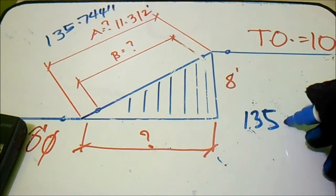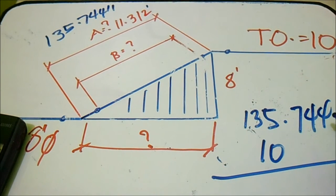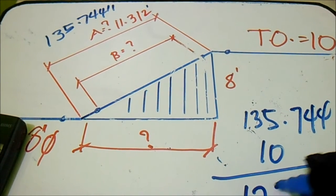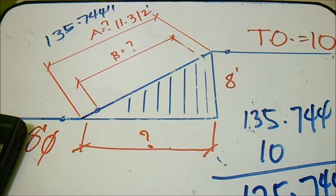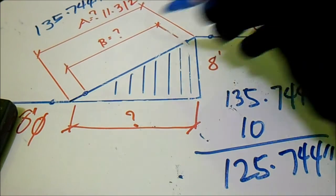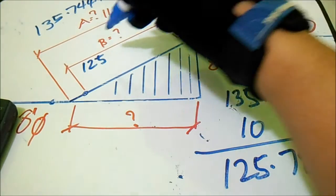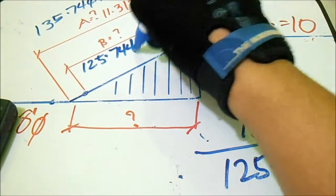135.744 minus 10. So 125.744 inches. Our answer for letter B is 125.744.